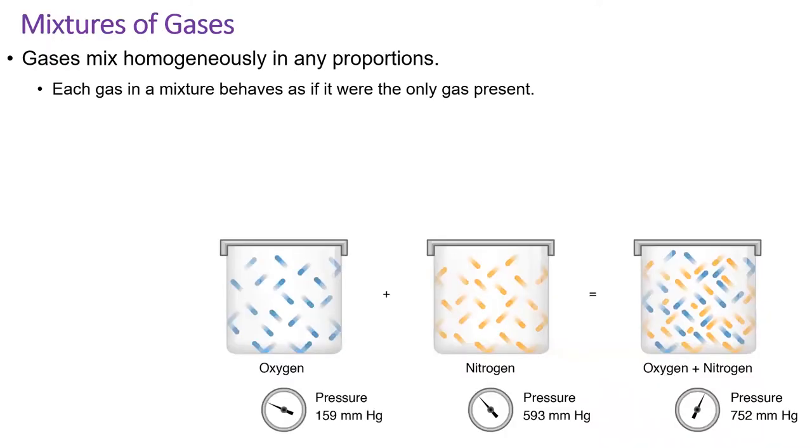When gases are mixed together, each gas behaves independently, assuming no reaction occurs. This means that each gas has its own pressure, which can be calculated with PV equals nRT if the volume, moles, and temperature are known.